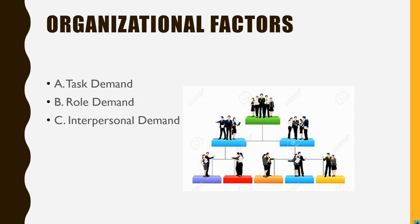Next are organizational factors, which are divided into three types: task demand, role demand, and interpersonal demand. Task demand refers to the nature of the job — what type of roles and responsibilities you have. For example, a pilot has more stress compared to a bank employee. Role demand means the expectations of other people from a particular job; it may include role ambiguity, where a person is unclear about his role and responsibility, leading to more stress. Interpersonal demand means group pressure — if people are working on a project together and have interpersonal conflicts among group members, it may lead to stress.